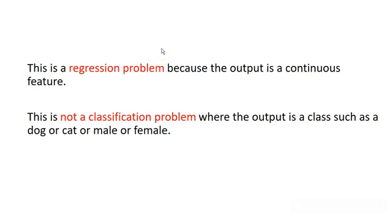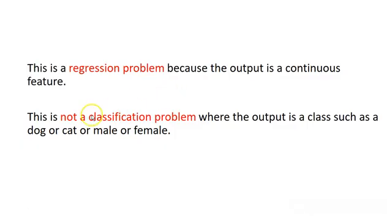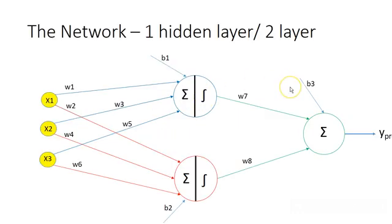This is a regression problem, not a classification problem. Regression has a continuous output feature — for example, grades and marks are continuous and could be 79, 87, 94, 45, and so on. Classification, by contrast, predicts a class such as dog or cat, or male or female.